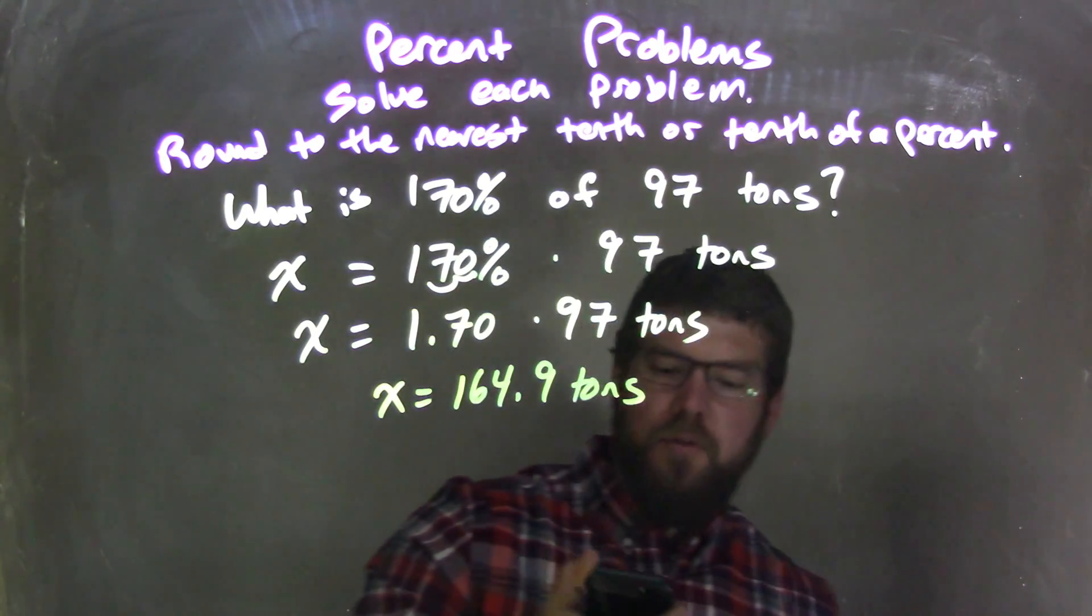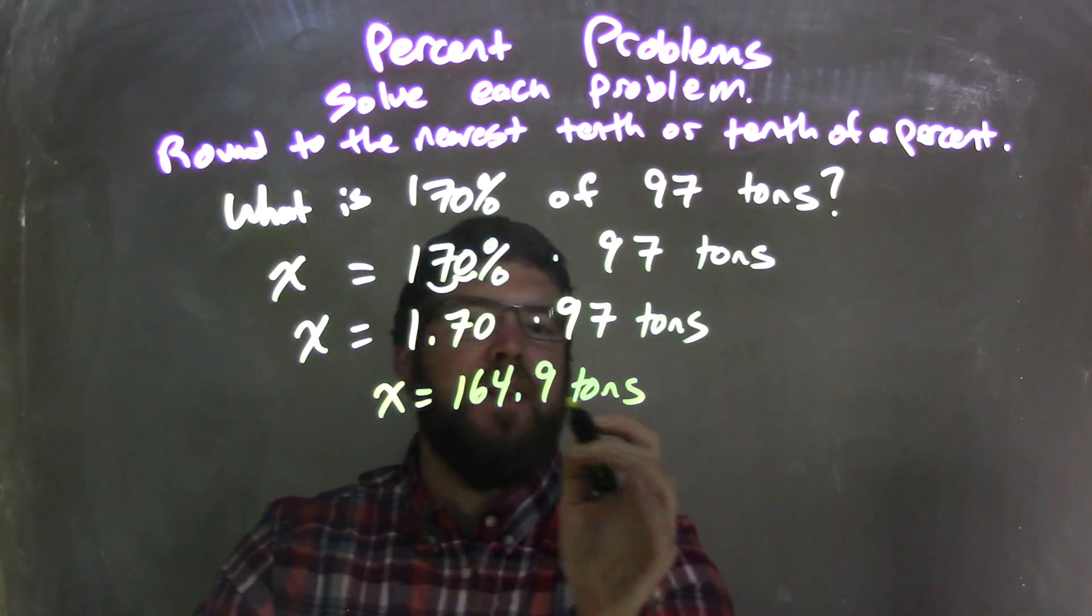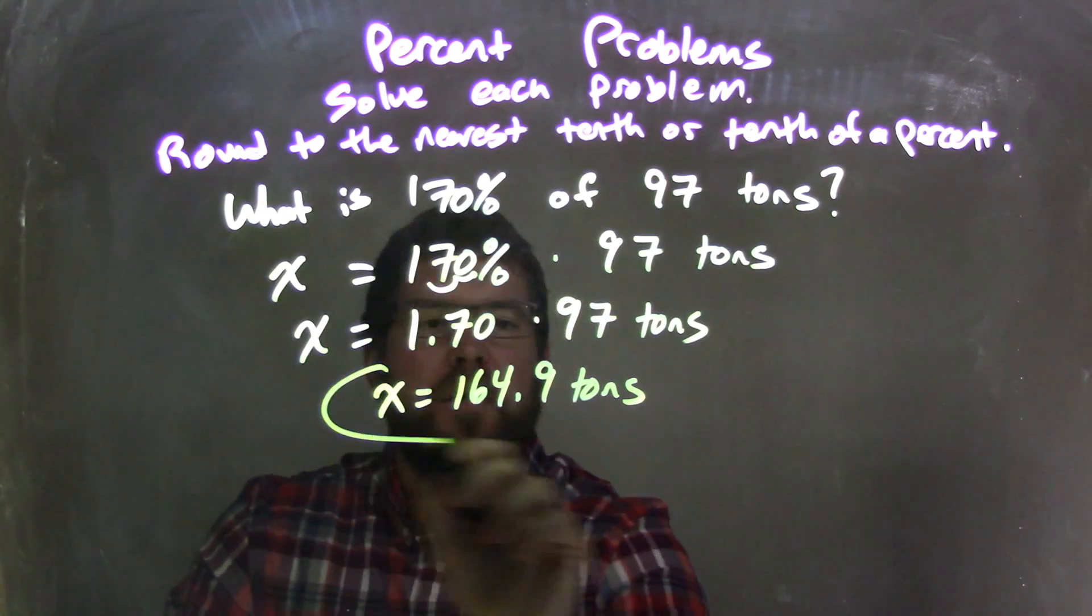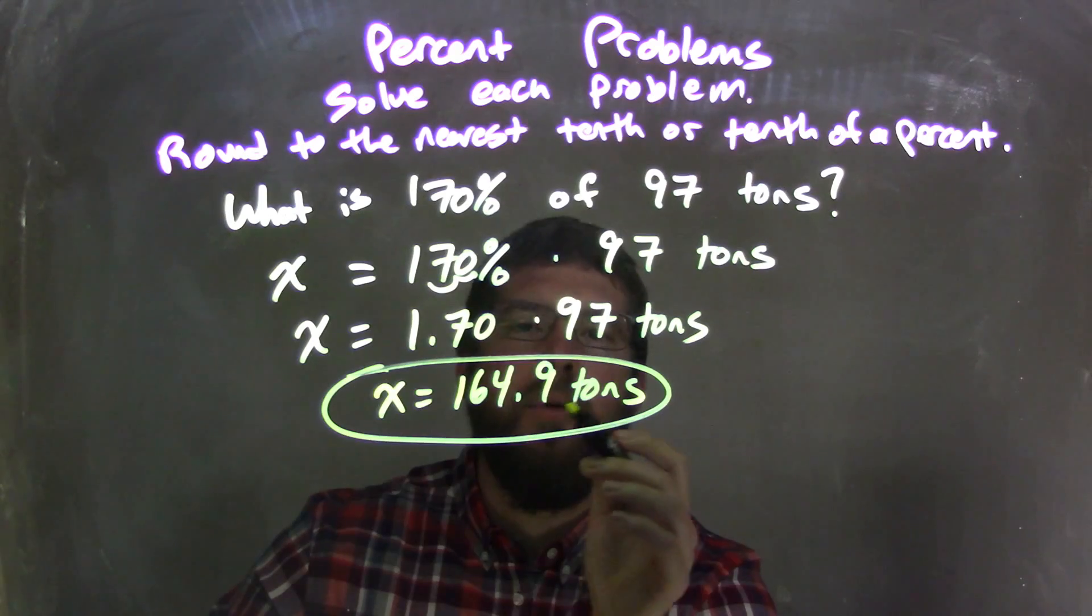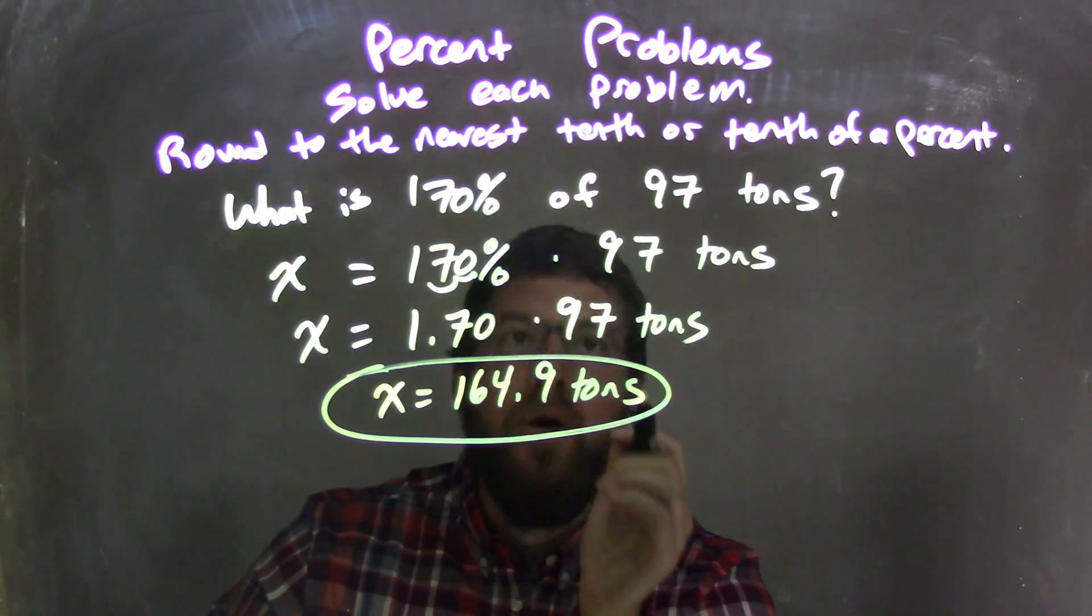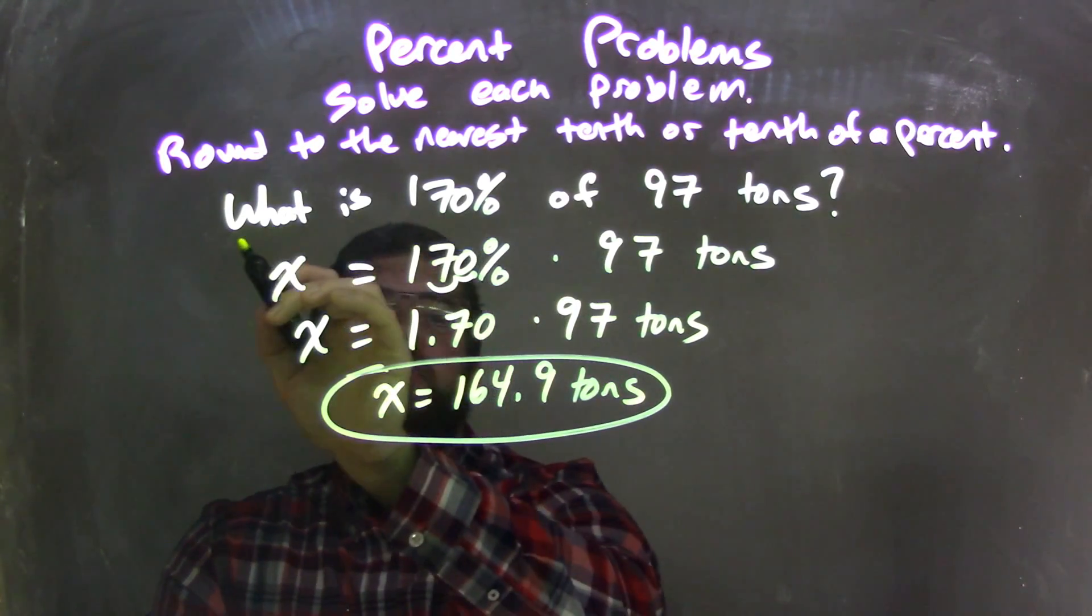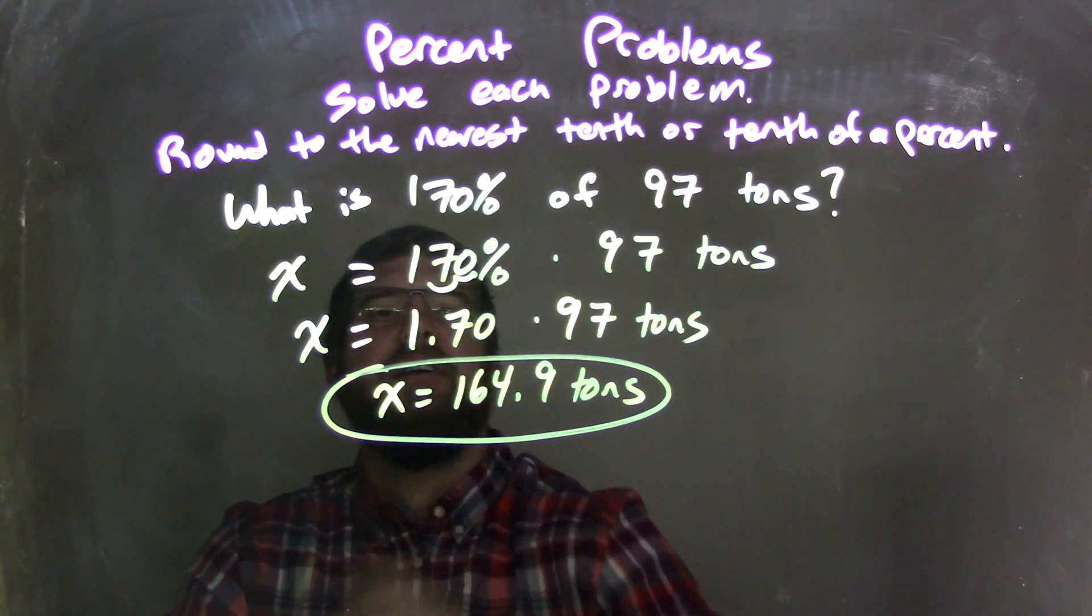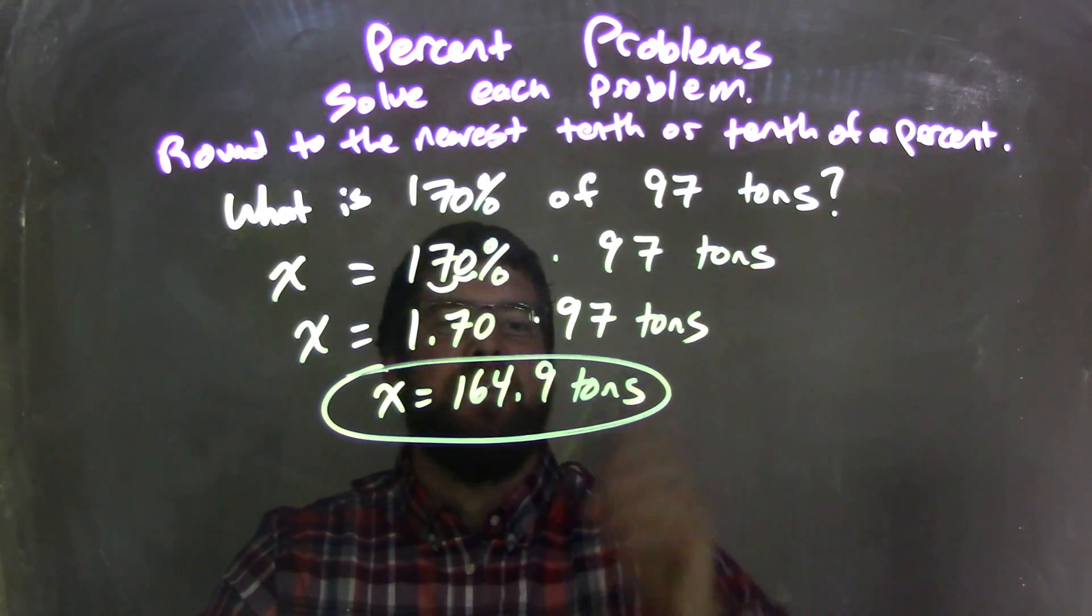And here, there's no need to round, that was the answer we were given. It's to the nearest tenth, there's nothing to the right. So that's our final answer: X is equal to 164.9 tons. So that answers the question, 164.9 tons is 170% of 97 tons.